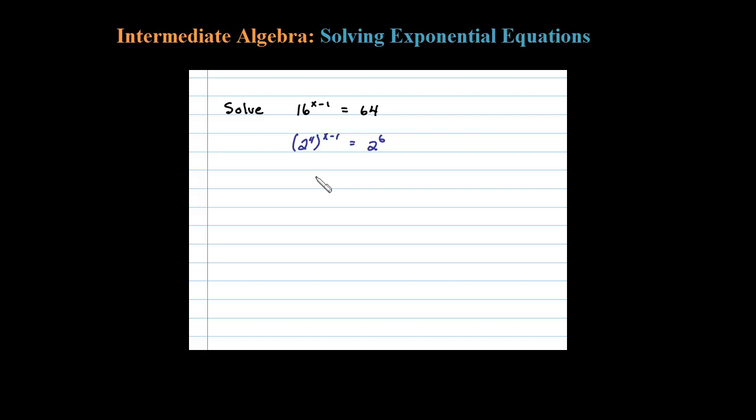If I simplify a little bit, I'll have 2 to the 4 times (x-1) power equals 2 to the sixth power. Notice I was able to rewrite the exponential expressions on both sides of the equation with the same base 2.